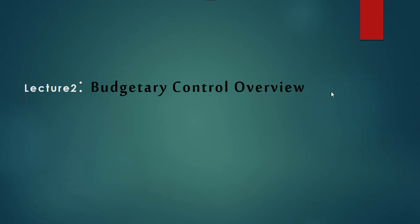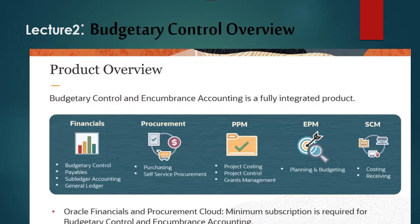Welcome to the second lesson of lecture 2: Budgetary Control Overview. With the product overview, budgetary control and encumbrance accounting is a fully integrated product. The minimum subscription required to use the budgetary control and encumbrance accounting features is Financials and Procurement Plus Expenses.